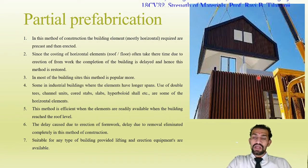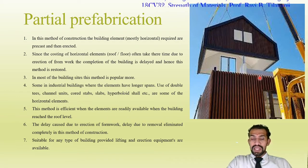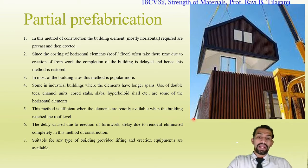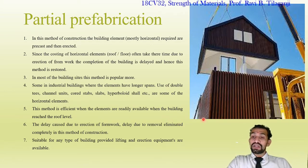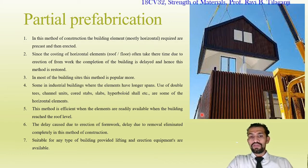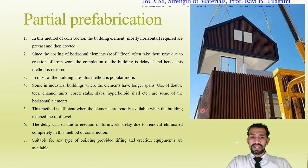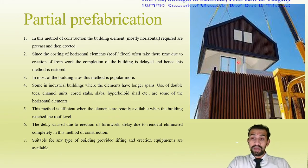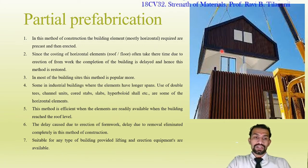In industrial buildings with longer spans, elements like double-T units, channel units, corrugated slabs, and hyperboloid shells are used as horizontal elements. This method is efficient when elements are readily available and the building has reached roof level. Even interior paintings are completed in prefabrications, providing end-to-end user-friendly construction.